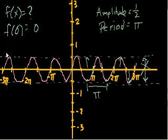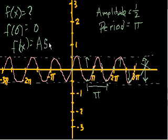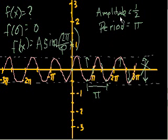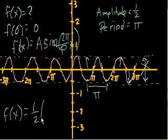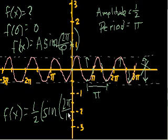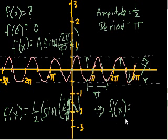So we know the formula is going to take the form f of x is going to equal the amplitude times sine of 2π over the period x. And if we just substitute these numbers we just figured out, we know that f of x is equal to 1 half sine of 2π over π x. The π's cancel out and we get f of x is equal to 1 half sine of 2x.